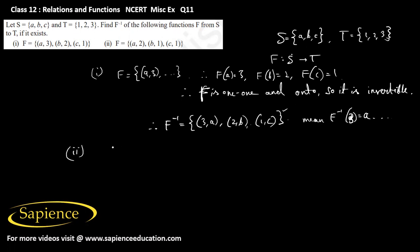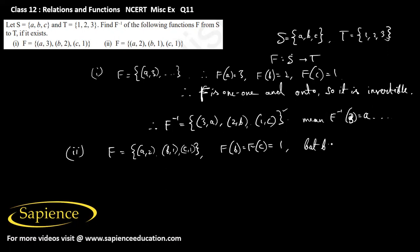In the second case, the function f contains the elements (a, 2), (b, 1), and (c, 1). This means f(b) = f(c) = 1, but b is not equal to c. Therefore the function f is not one-one.